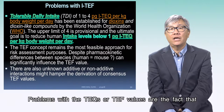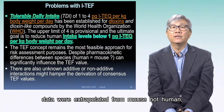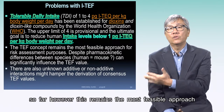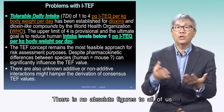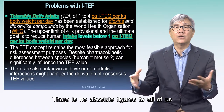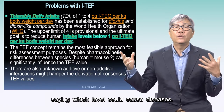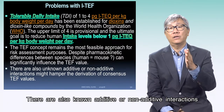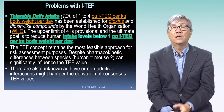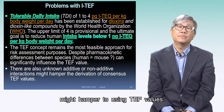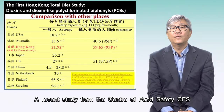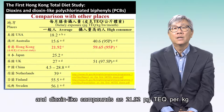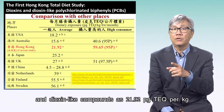Problems with TEF and TEQ values include the fact that data were extrapolated from mice, not humans. So far, however, this remains the most feasible approach for risk assessment purposes. There are no absolute figures telling us which level could cause disease, and there are also non-additive interactions that may complicate the use of TEF values. A recent study from the Centre for Food Safety (CFS) in Hong Kong estimated our body burden of dioxins and dioxin-like compounds as 21.92 pg TEQ per kg body weight per month.